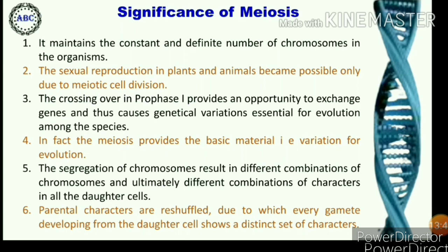The significance of meiosis: it maintains the constant and definite number of chromosomes in the organism. Sexual reproduction in plants and animals became possible only due to meiotic cell division. The crossing over in prophase first provides an opportunity to exchange genes and thus causes genetic variation essential for evolution among species. In fact, meiosis provides the basic material — variation — for evolution. The segregation of chromosomes results in different combinations of chromosomes and ultimately different combinations of characters in all daughter cells. Parental characters are reshuffled, so every gamete developing from the daughter cell shows a distinct set of characteristics.